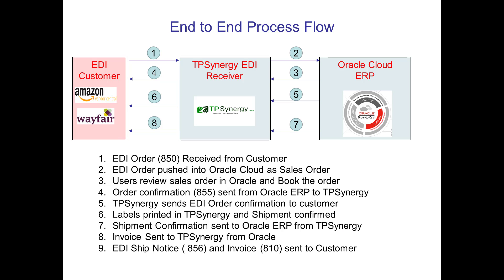The end-to-end process for EDI transactions is as follows. Step 1: EDI order 850 received from customer. Step 2: EDI order pushed into Oracle Cloud as a sales order automatically. Step 3: TP Synergy verifies order confirmation in Oracle and sends EDI 855 to customers.